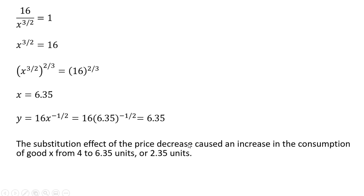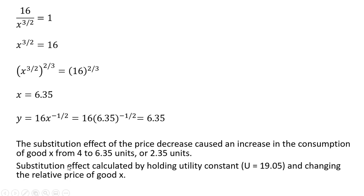The substitution effect of the price decrease caused an increase in consumption of good X from 4 to 6.35 units — a 2.35 unit increase. To recap, the substitution effect is calculated by holding utility constant at 19.05 and changing the relative price of good X, allowing it to fall from $10 to $5.